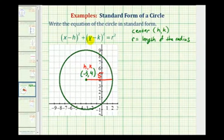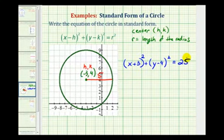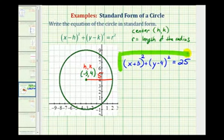So the equation of this circle in standard form would be the quantity x minus negative three, which is x plus three, squared, plus the quantity y minus four squared, must equal r squared, or in this case five squared, which is equal to 25. This would be the equation of our circle in standard form.